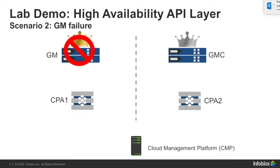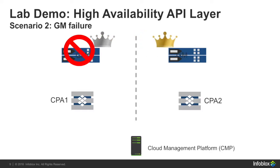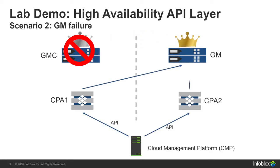The other failure scenario we can demonstrate is around the grid master failure itself. The issue is what happens if the grid master itself is down. In the grid, we can actually promote the grid master candidate, and by doing so, you're shifting the authority across to the other data center. What then happens is your cloud management platform can still continue to operate as usual, sending API calls to either cloud platform appliance, which will then route it to the relevant IP address management authority.